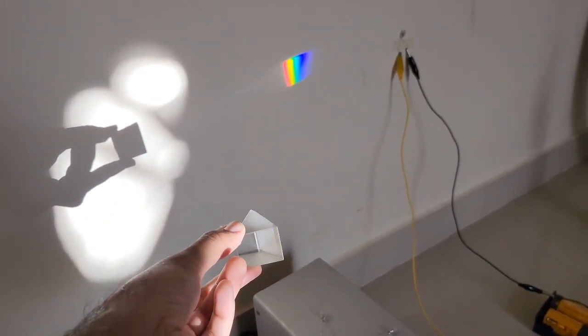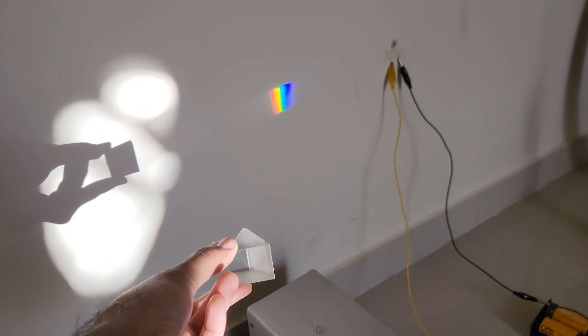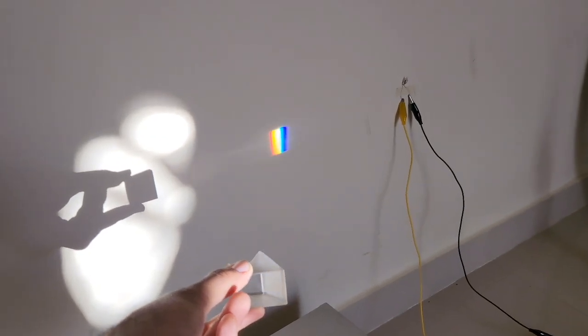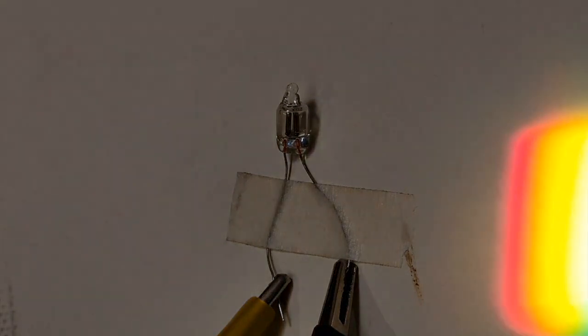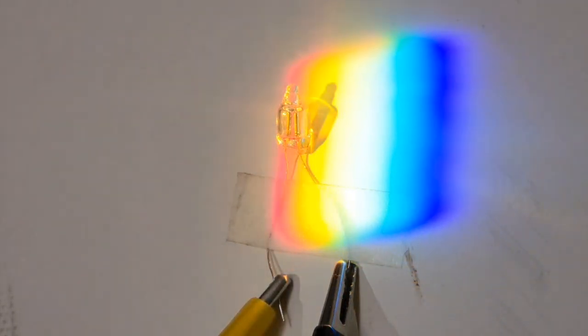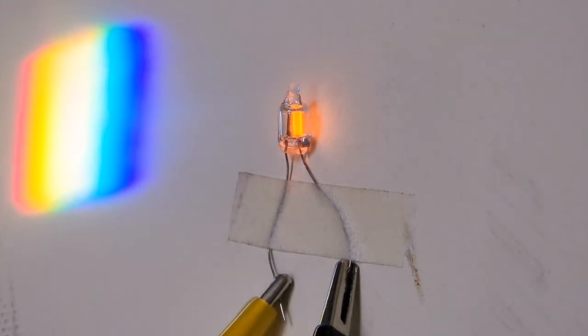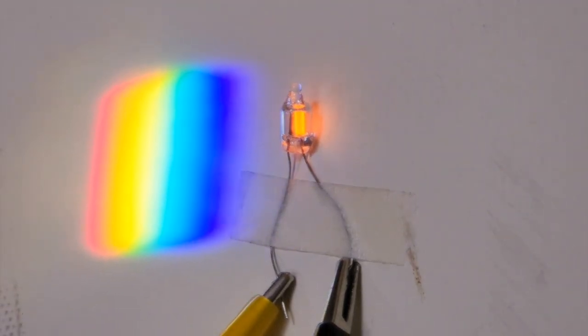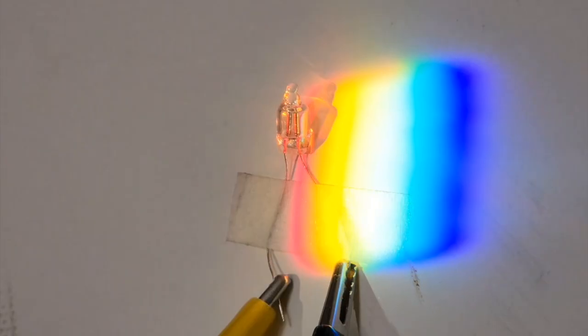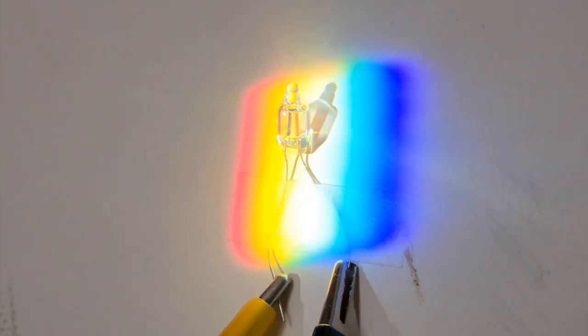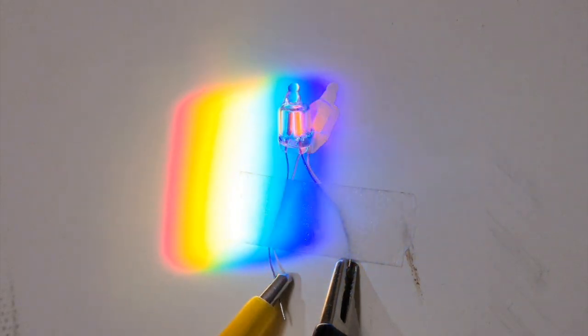We can use a prism to split sunlight into its component colors and see which color turns the lamp on. It appears that the neon lamp lights up in the orange portion of the spectrum, indicating that the electrodes may be coated with a material like barium oxide, which reduces the work function.